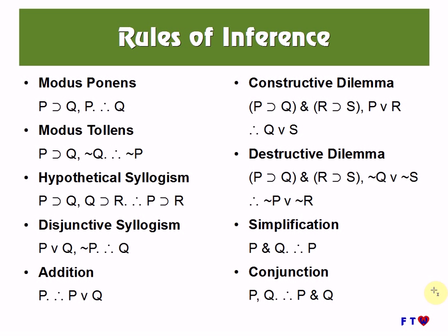Hello, in this video we are going to continue looking at the rules of inference, which are valid argument forms. In the previous video we looked at conjunction and simplification, which make use of the ampersand to represent AND, and disjunctive syllogism and addition, which make use of the wedge shape to represent OR. In this video we're going to be looking at modus ponens, modus tollens, and hypothetical syllogism, which all use the horseshoe shape to represent IF-THEN.